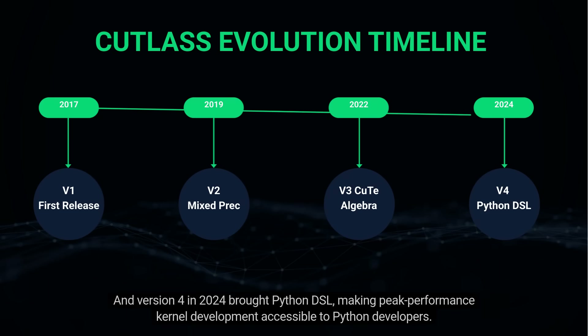Version 4 in 2024 brought the Python DSL, making peak-performance kernel development accessible to Python developers.